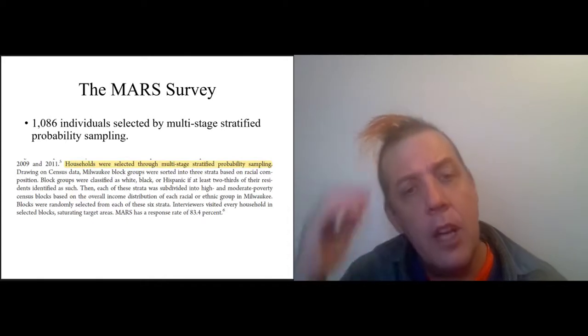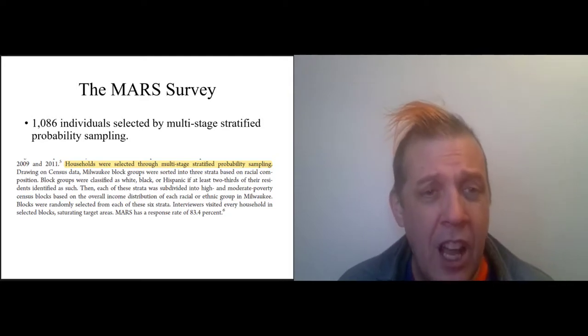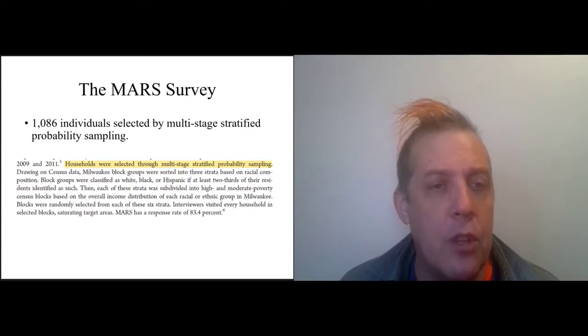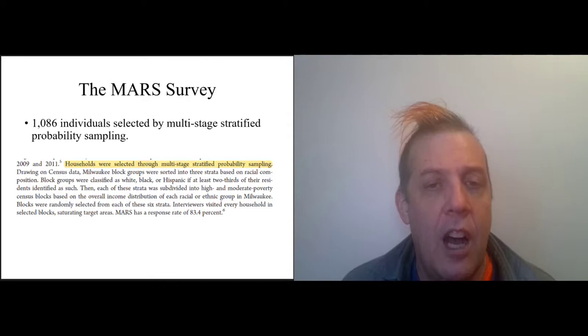So the 1,086 individuals in the MARS survey were selected this way. This is from Desmond and Gershenson, but the same description is given in Desmond and Schulenberger. Drawing on census data, Milwaukee block groups were sorted into three strata based on racial composition—white, black, or Hispanic—if at least two-thirds of their residents identified as such on the census. Then those blocks were further divided into high and moderate poverty.